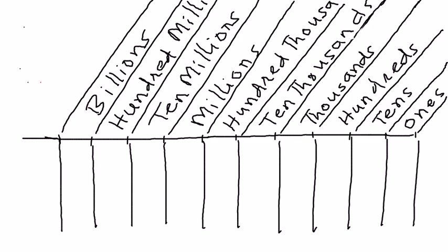Let us take some simple examples. Let's say we have a number 308. We can represent that number as 308. The eight is in the ones place, the zero is in the tens place, and the three is in the hundreds place.